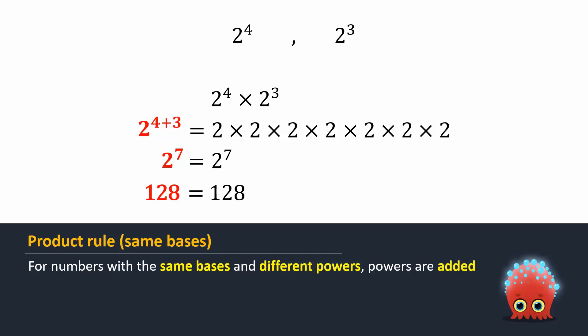To generalize, we can write this law as x^m times x^n equals x^(m+n), where x is any rational number other than 0 and m and n are integers.